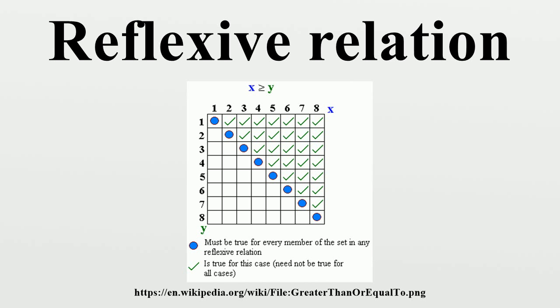The number of reflexive relations on an N-element set is 2^(N²-N).